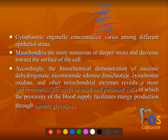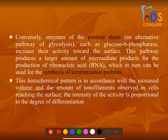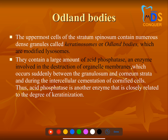Energy production is greater in the suprababsal and lower layers. The upper layers have fewer mitochondria and perform the pentose phosphate shunt — an alternative glycolysis pathway. Ultimately, these processes drive keratinization. The keratinosomes, also called Odland bodies, are modified lysosomes where the enzyme acid phosphatase is important and is mostly seen in these organelles.